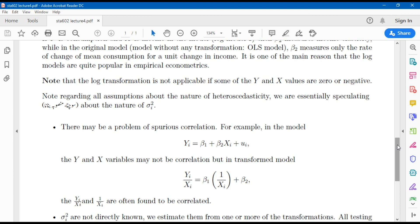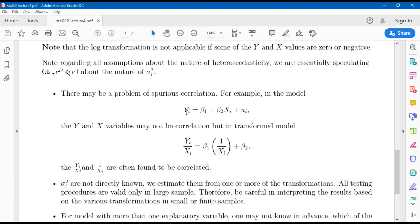Consider we have a model: Y_i equals beta 1 plus beta 2 X_i plus u_i. The Y and X variables may not have any correlation, but after transforming such as Y_i over X_i equals beta 1 times 1 over X_i plus beta 2, now in this model Y_i over X_i and 1 over X_i may often be correlated.